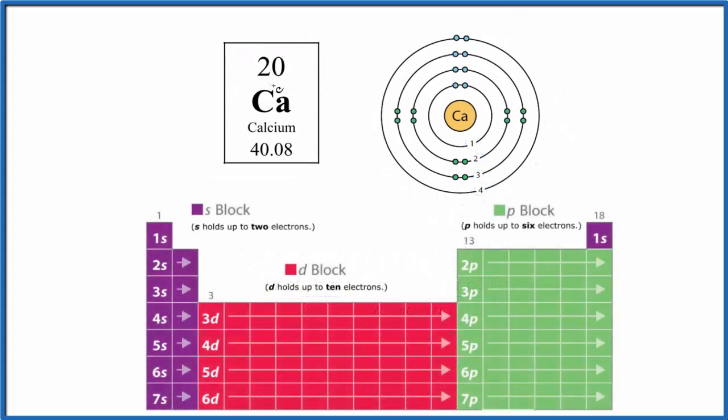So remember, we have 20 electrons. We have the first period, this is the first energy level. We have one, two, we can put two electrons in the first energy level. And there they are. This is full now.